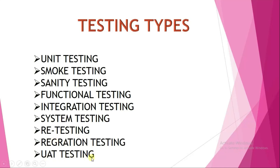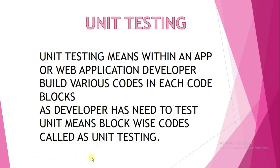First is unit testing. Within an app or web application, a developer builds code in various code blocks. Each block is called a unit, and the developer needs to test each block to check whether whatever was coded is correct or not. This is called unit testing, and it is performed by the developer, not by the tester.